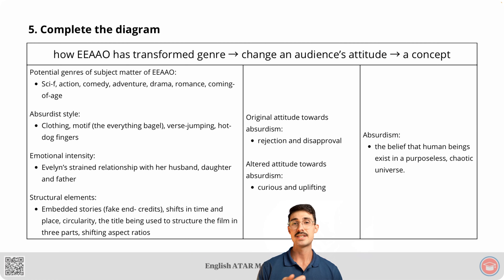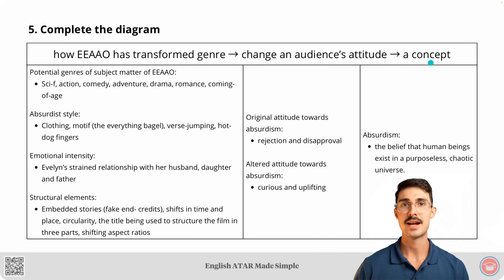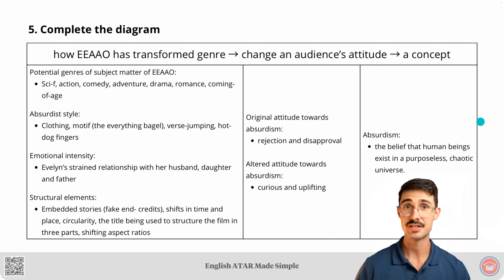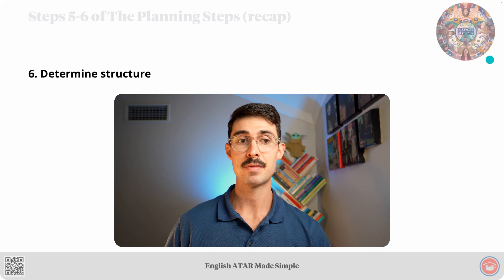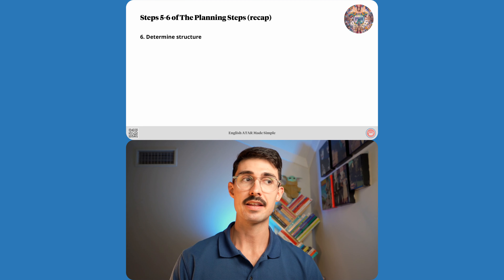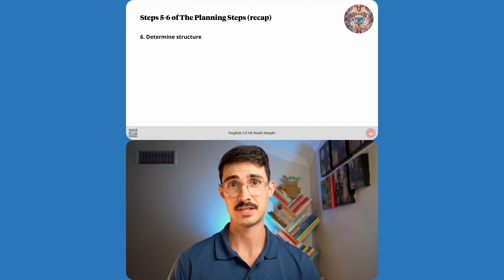We said that the audience's original attitude towards the concept of absurdism is one of rejection and disapproval, and that has changed to become curious and uplifting. Our final main element of the question in this diagram is a concept — absurdism — which refers to the belief that human beings exist in a purposeless, chaotic universe. That is step number five. Step number six was determined structure. A reminder that the PDF study notes has replicated the entirety of step six; we'll look at a condensed version in this video.